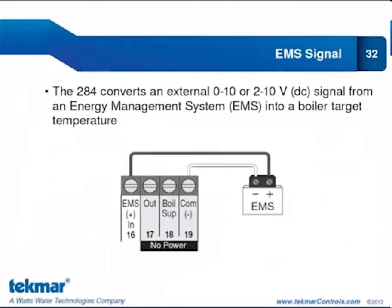By selecting application mode EMS, the 284 converts an external 0 to 10V or 2 to 10V signal from an energy management system into a boiler target temperature. New on the 284 are dedicated terminals for the EMS input — we're no longer sharing that with the outdoor sensor terminals. This is one-way communication: the 284 receives a water temperature from the EMS but does not communicate anything back. To clarify terminology: EMS refers to the input received from an energy management system, while EMS1 and EMS2 are outputs used to control boilers requiring a temperature-based target.